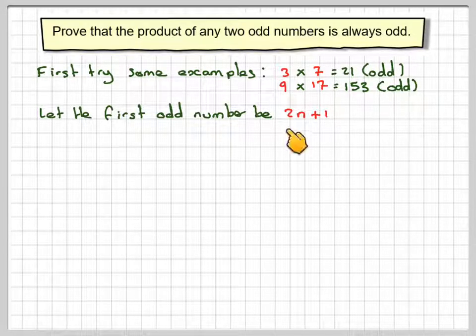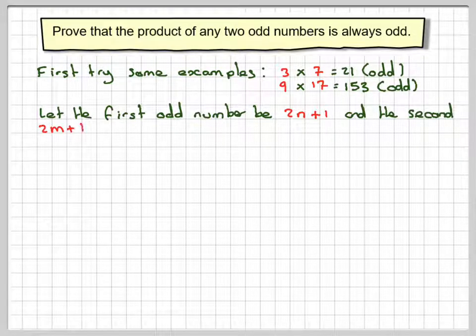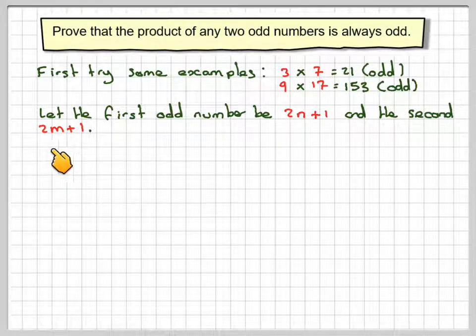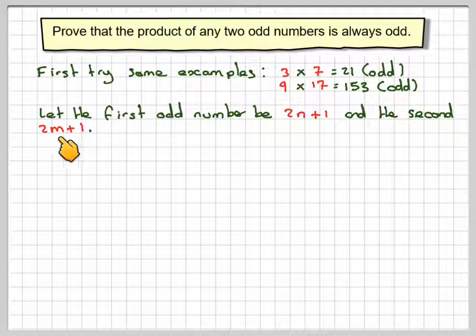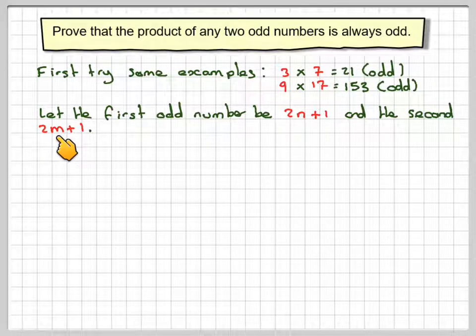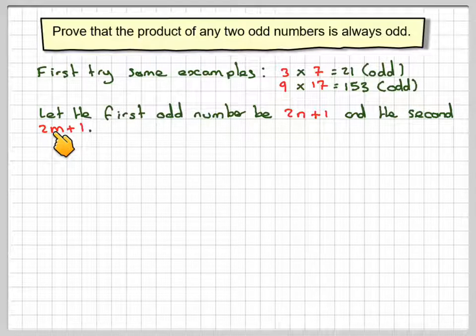So if we let one of the integers be 2n plus 1, then we're not looking for consecutive integers, we're looking for any two odd numbers. So we have to let the other one be 2m plus 1, where m stands for another integer. So this is one integer, this is another integer.